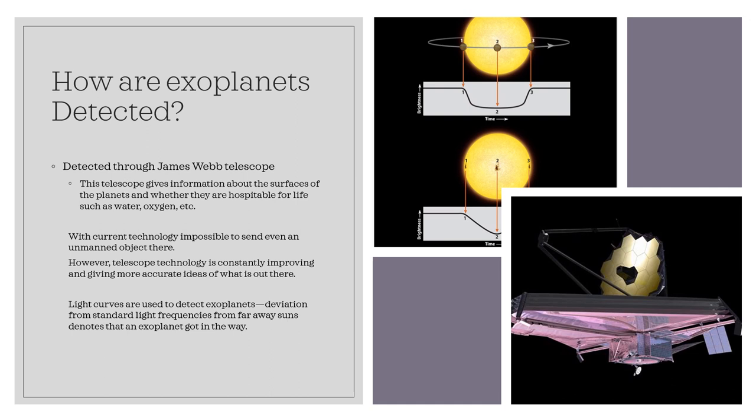The top part of these pictures show light curves, which are used to detect the exoplanets. Deviation from standard light frequencies from faraway suns denotes that there is an exoplanet that got in its way.